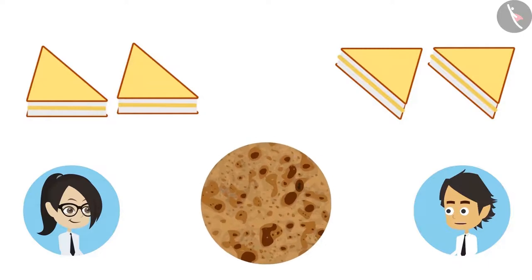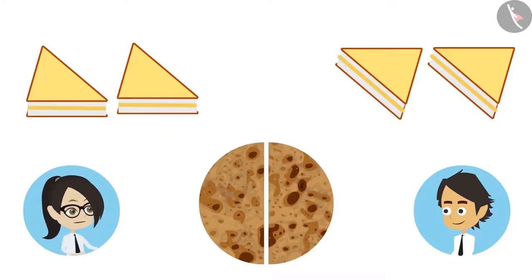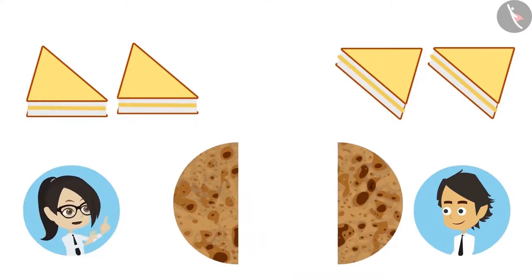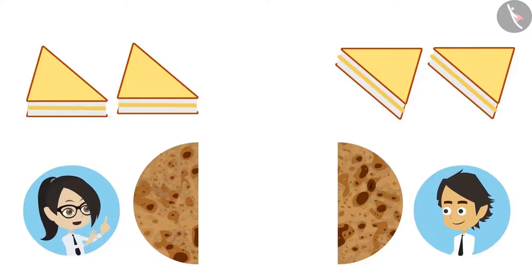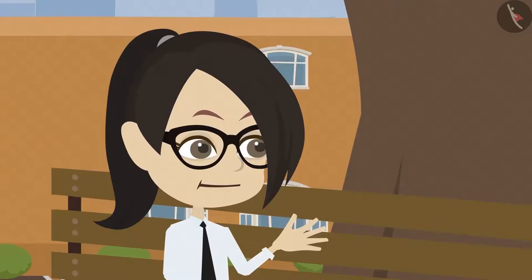But I have only one paratha. How will we divide it into two halves? This is very easy — we will cut it from the middle. Now look, we made two equal halves of one paratha. Now you eat one part and I will eat one part. This means objects can be counted and divided to make a half.